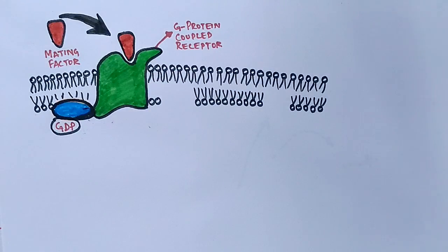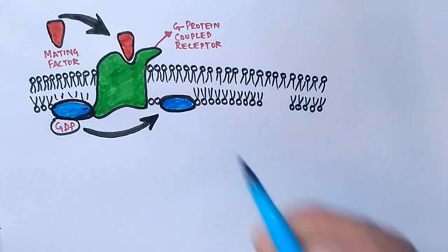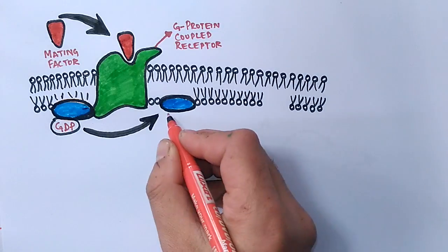The ligand binding to the GPCR causes conformational changes in the G protein coupled receptor, which allows it to act as a guanine nucleotide exchange factor, GEF. By the action of GEF, the GDP is exchanged for GTP on the G protein.